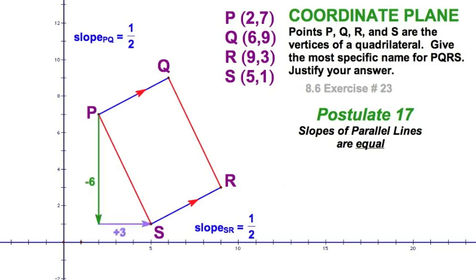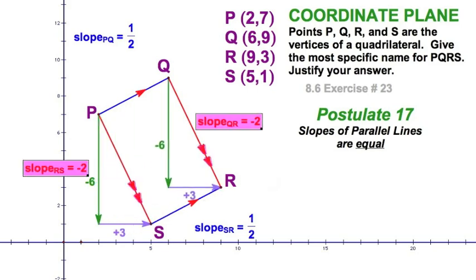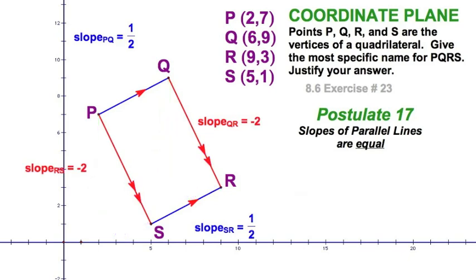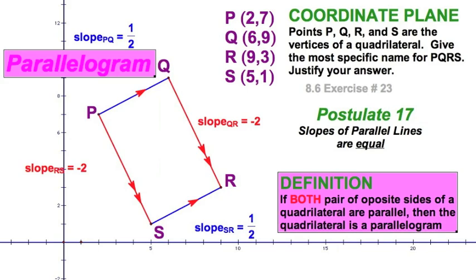And down 6 over 3. Down 6 over 3. That sure looks like a slope of negative 2. So looks like we've got both pairs of opposite sides are parallel. And we know that that makes a parallelogram.